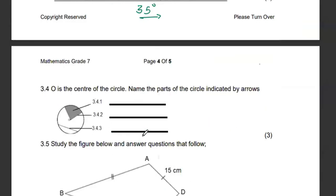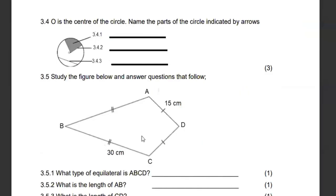Then 3.4, O is the center of the circle. They want us to name the parts. We know that 3.4.3, I'll start from there, that's known as a chord. 3.4.2, that's a radius. And then the area that is shaded here will be known as a segment. But some people would always call it a sector also, but I'm taking segment.